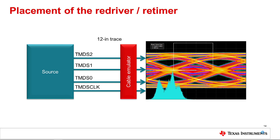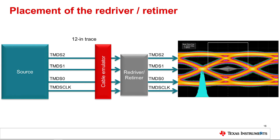Extending the trace by 12 inches, we can now see that the eye is completely closed and failing the HDMI 2.0 worst case eye mask requirement. Clearly, the V-swing requirement of 400 millivolts to 600 millivolts has also not been met. From our equation, we know that the approximate insertion loss is 0.57 dB per inch for a 6 Gbps signal. For a 12-inch trace, this will be 6.9 dB loss at the Nyquist frequency of 3 GHz. If we add the redriver to the output of the 12-inch trace and set the redriver equalizer to 6.9 dB to match the insertion loss, we can see that the eye is open again and passing the HDMI 2.0 worst case eye mask requirement. The V-swing requirement of 400 millivolts to 600 millivolts has been met. With an eye this clean, we should see clean jitter-free video on the output. A retimer with adaptive EQ will also result in an open eye.